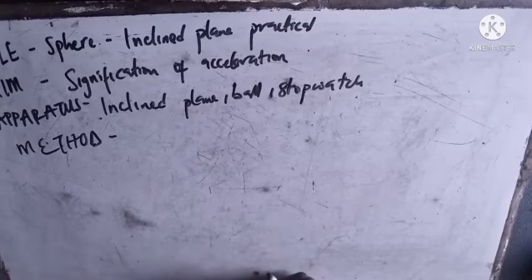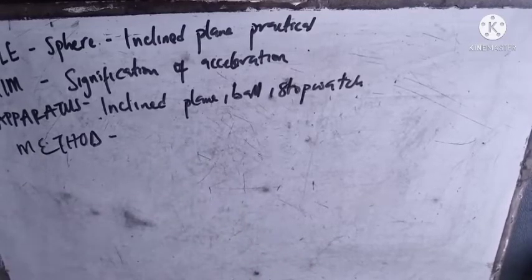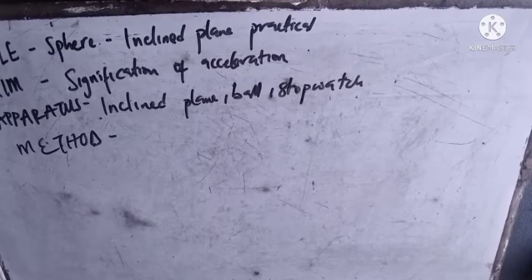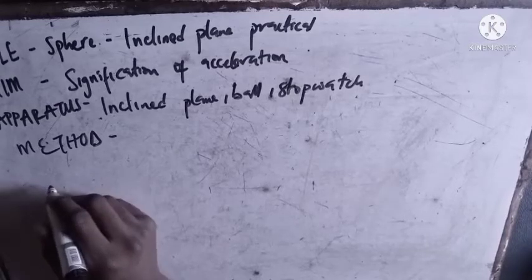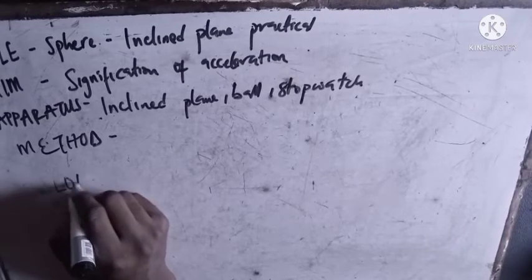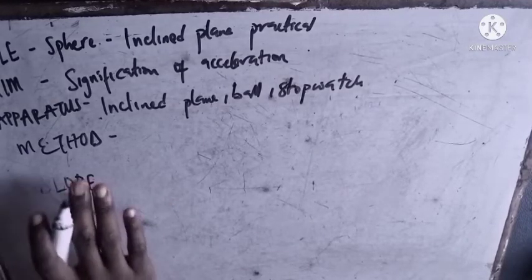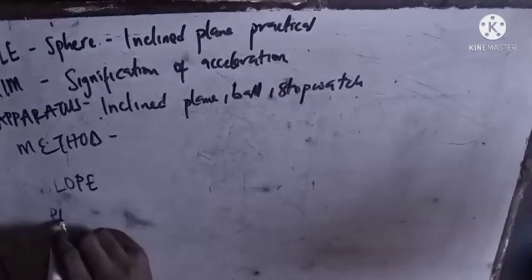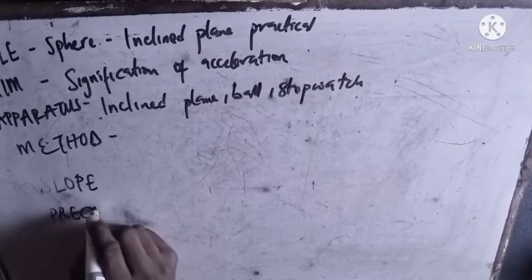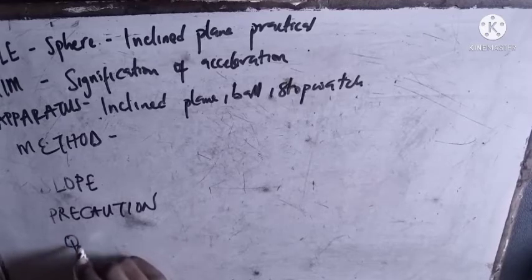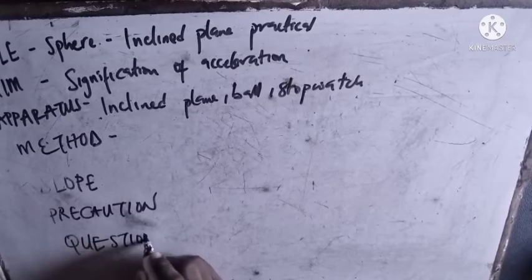Then you need to find your apparatus also. Your method is always in your question - just copy the procedure given. After your method you go straight to your graph, then write the slope or maybe you can write the slope under here also. Then your precaution, then you answer the questions that they asked you.